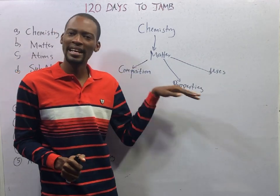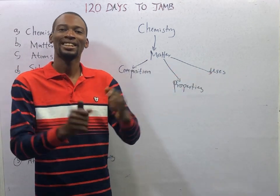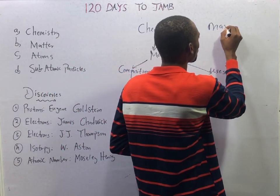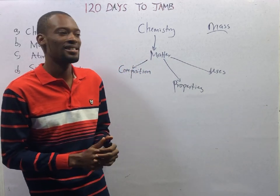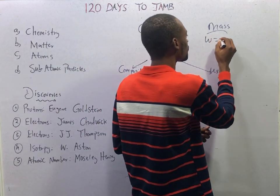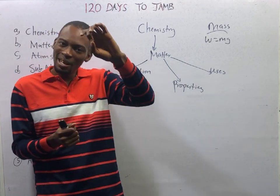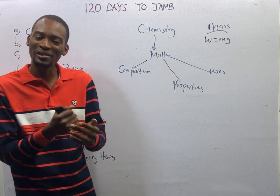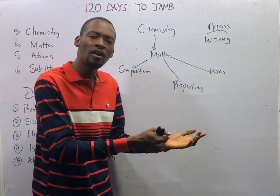This begs the question: what is matter? Matter is anything that has mass and occupies space — not weight, but mass. Mass is the quantity of matter a body possesses; weight is mass times gravity. For example, if a body of mass 2 kg experiences gravity of approximately 10 m/s², we have a weight of 20 Newtons. Matter is divided into pure and impure substances.